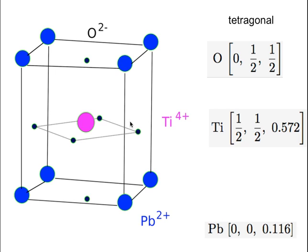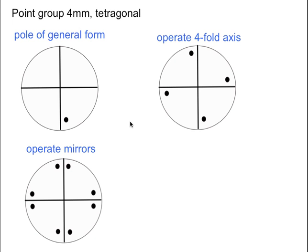Let us see what symmetry elements we have. Tetragonal means we have to look at the highest order axis along the z direction, which is a tetrad — a four-fold rotation axis. And what about symmetry elements along x and y? There is a diad, but there is also a higher symmetry element: because these are rectangular faces, there are mirror planes. So the point group symmetry for this would be 4mm.